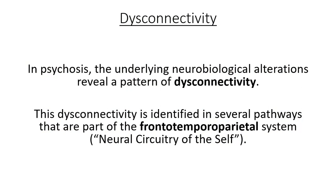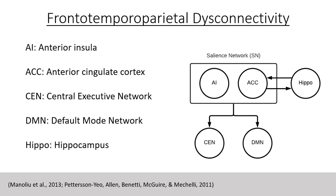Moving a little deeper, or departing from the most macroscopic level, we see patterns of disconnectivity. In this perspective, there are alterations in the way one region of the brain connects to another. It is in this domain that we begin to understand some of the symptoms of psychosis. A closer look at some of the key pathways altered within the frontotempoparietal system reveals disconnectivity between the salience network, central executive network, default mode network, and hippocampus.